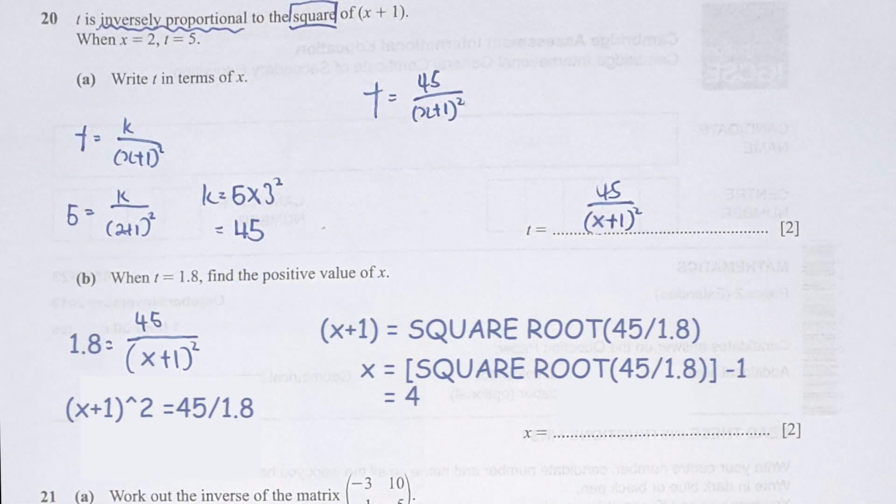For question 20, keyword here is inversely proportional and the keyword square. So t equals k over x plus 1 squared. Substituting 5 and 2 into it, you should get your k as 45. So t final result equals 45 over x plus 1 square.